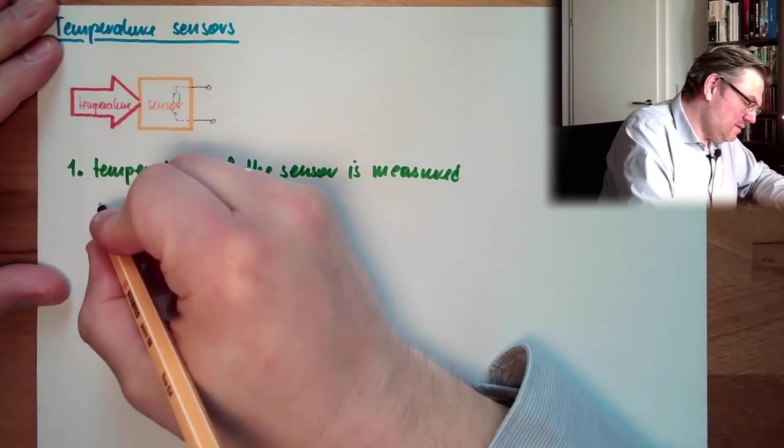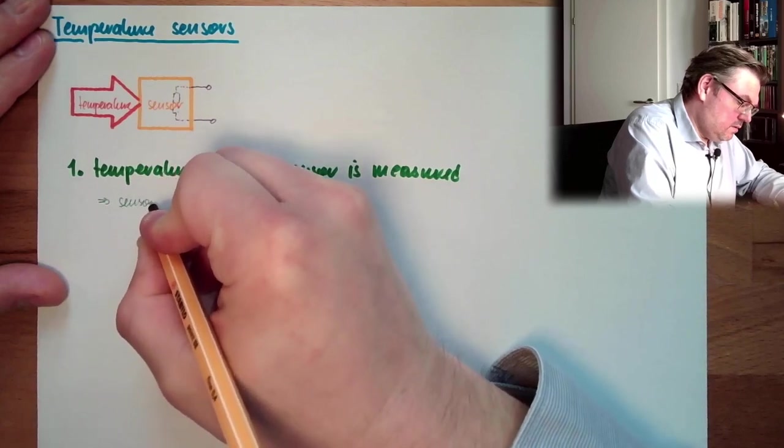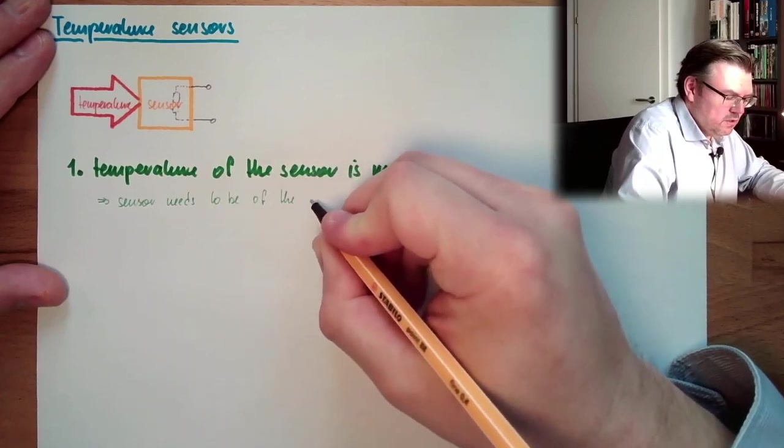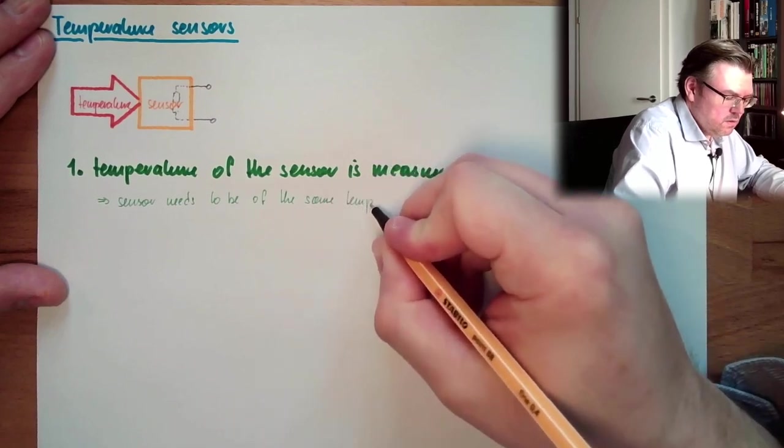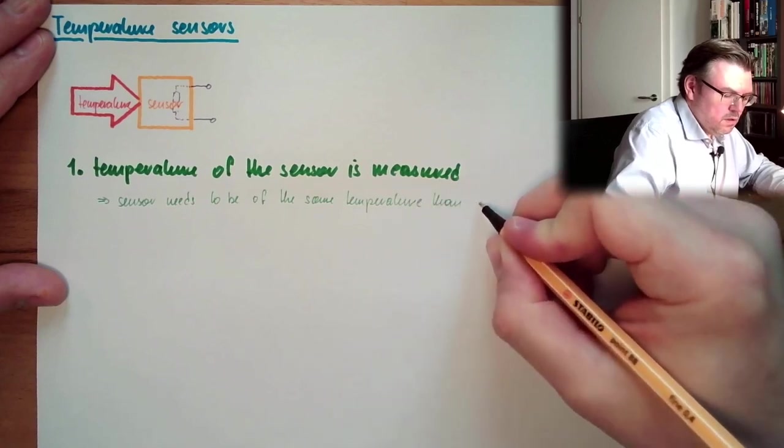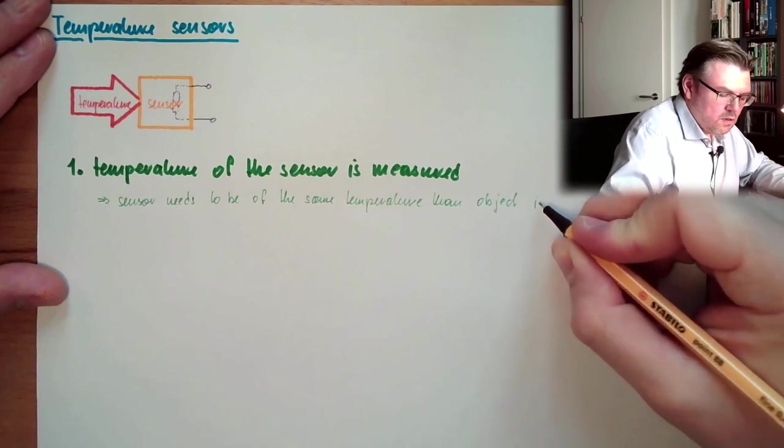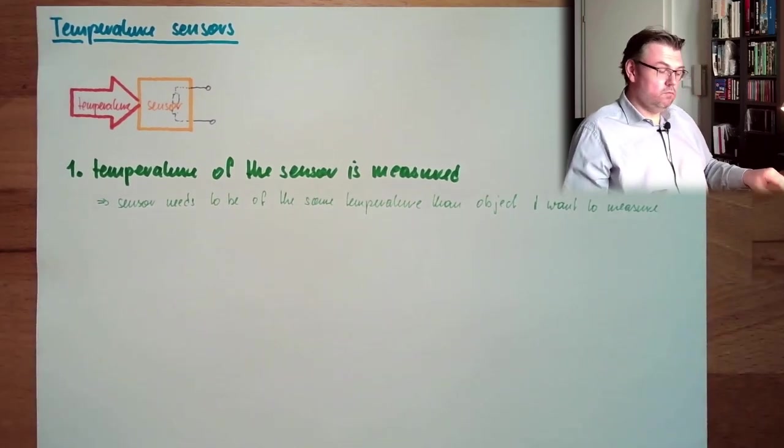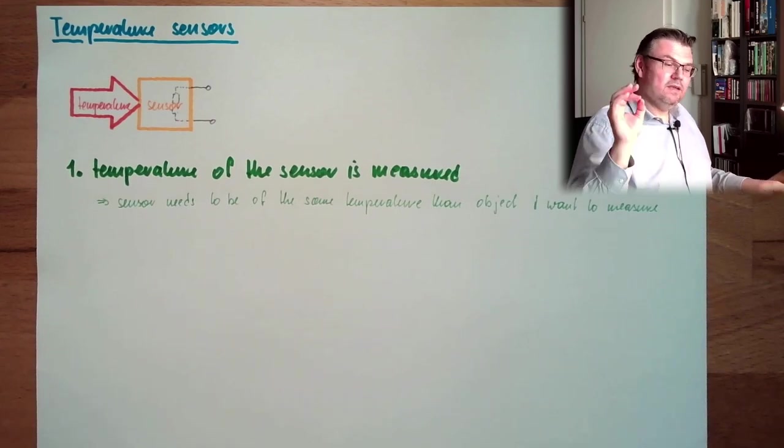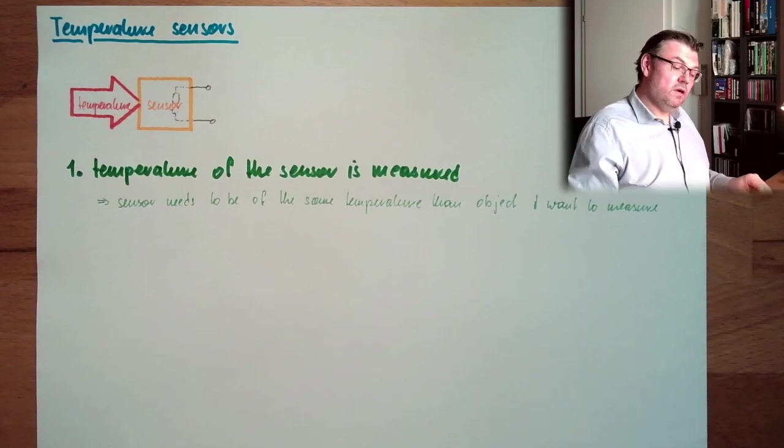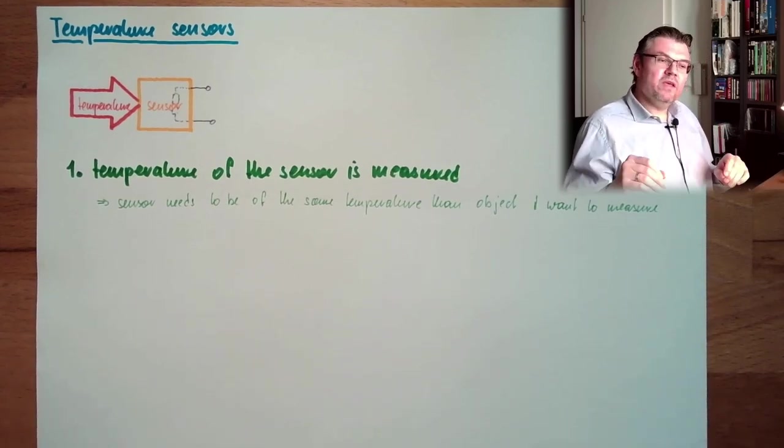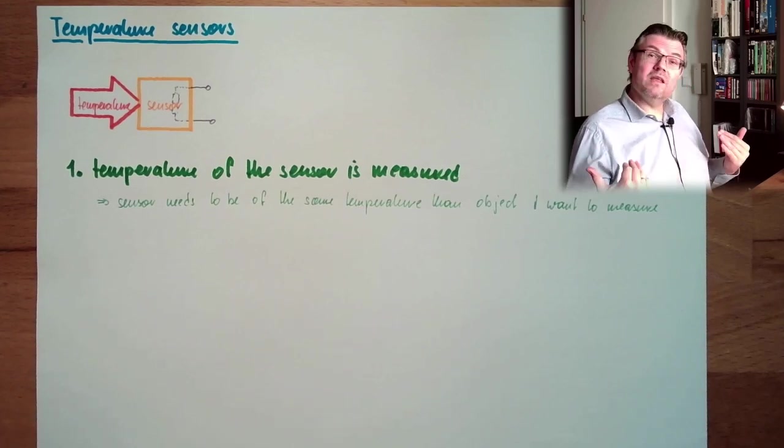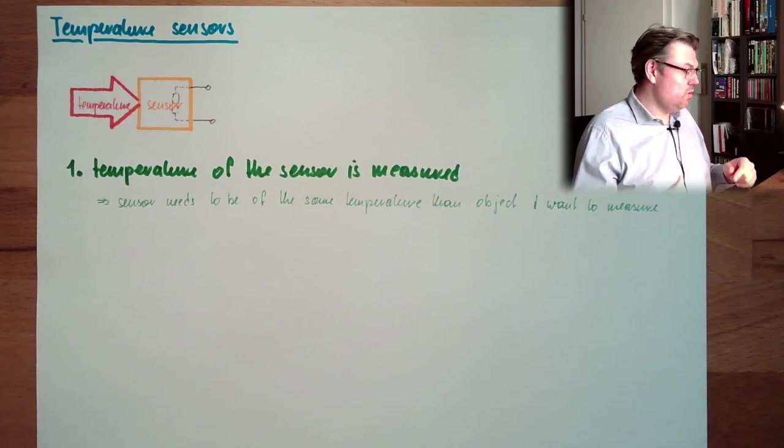So this means the sensor needs to be of the same temperature as the object I want to measure. We're measuring the temperature of the sensor. The sensor needs to have the same temperature than the measured object. If the measured object is hotter than the sensor, the sensor needs to be heated up. If the temperature of the measured object is colder than the sensor, the temperature needs to be cooled down.